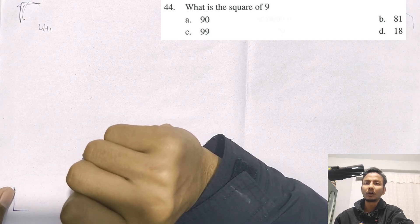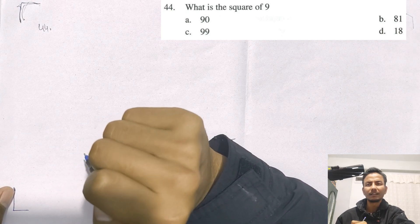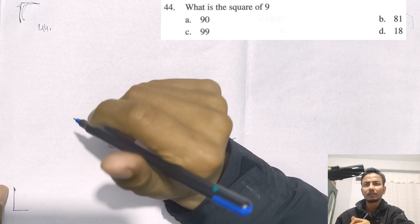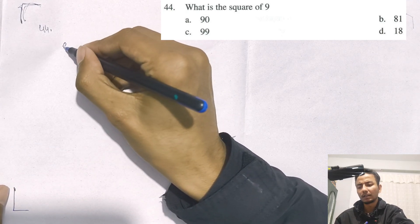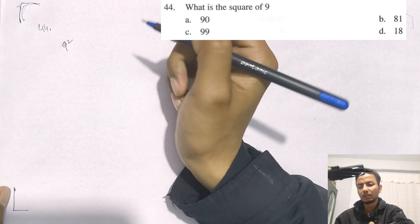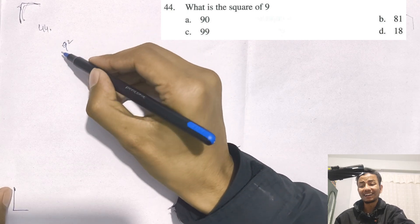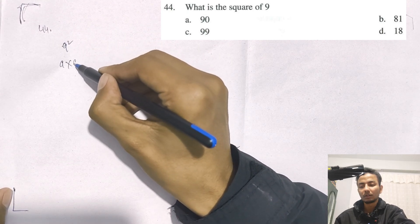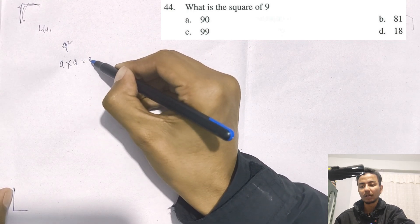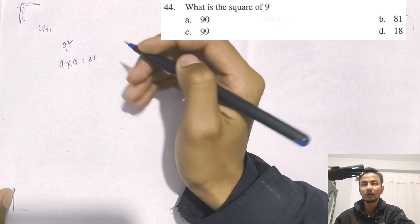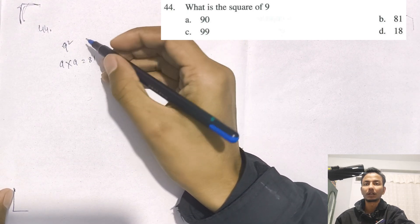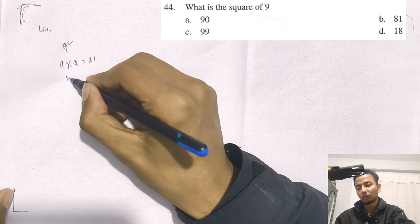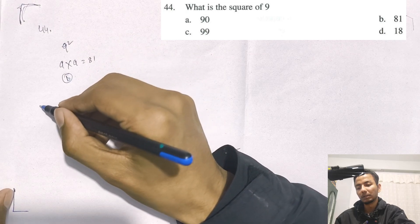What is the square of 9? This is the square of 9. So the correct answer is B.